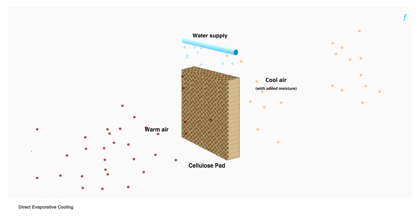In direct evaporative cooling, warm air from outside is pulled through moist pads where it is cooled due to evaporation. The cool air with added moisture is then drawn to the space requiring cooling using a blower.